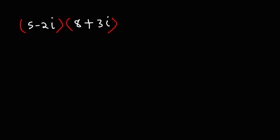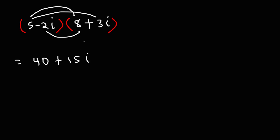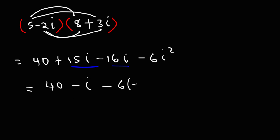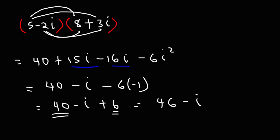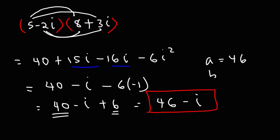Now let's multiply two imaginary numbers together. We need to FOIL (5 minus 2i)(8 plus 3i): 5 times 8 is 40, 5 times 3i is 15i, negative 2i times 8 is negative 16i, and negative 2i times 3i is negative 6i squared. Since i squared is negative 1, negative 6i squared becomes positive 6. Combining: 40 plus 6 is 46, and 15i minus 16i is negative i. So the answer in standard form is 46 minus i, where a is 46 and b is negative 1.